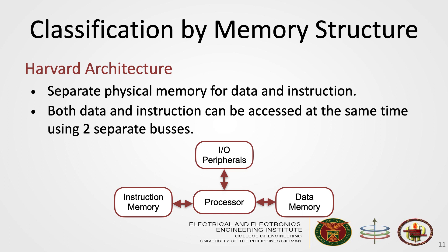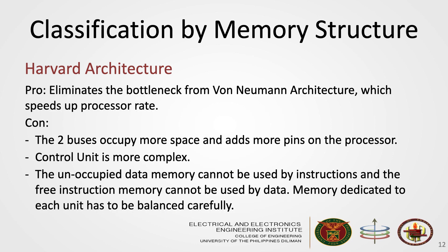This bottleneck was addressed by the second architecture called Harvard architecture. In this architecture, there is a separate physical memory for data and instructions. There are also two separate buses that enable access of data and instruction at the same time. It generally has faster processing because it eliminates the von Neumann bottleneck. But there's a trade-off: the two separate buses add more space and pins on the processor, the control unit is more complex, and memory cannot be maximized properly because free space in the data memory cannot be used for instructions and vice versa.